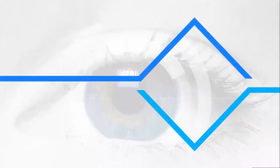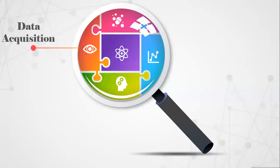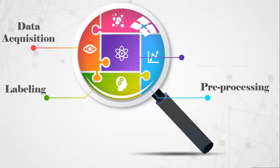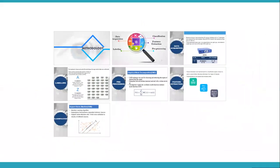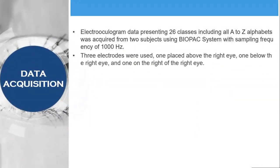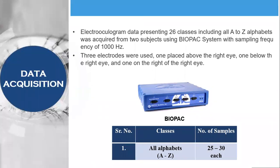Our methodology involves data acquisition, labeling, preprocessing, feature extraction, and classification. First, data acquisition: Electrooculogram data presented for six classes, including all A-Z alphabets, acquired from two subjects using BioPAC system with sampling frequency of 1000 Hz. We use three electrodes placed above the right eye, one below the right eye, and one on the right of the right eye. In the figure the BioPAC system is shown. All data samples for all alphabets were collected from A to Z, and almost 25 to 30 signals were gathered for each alphabet.